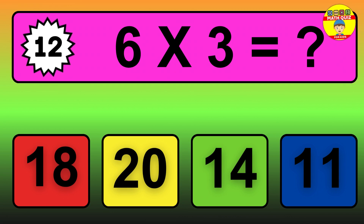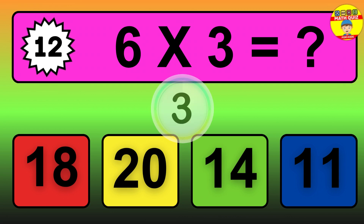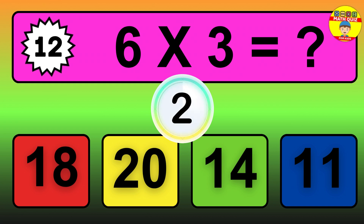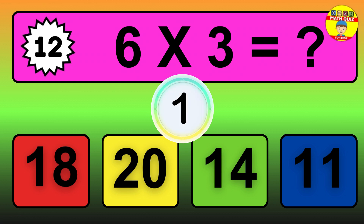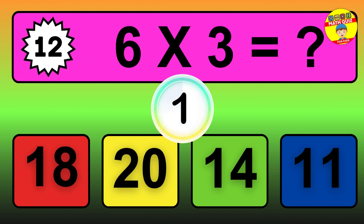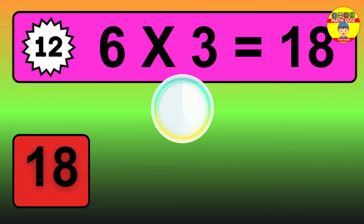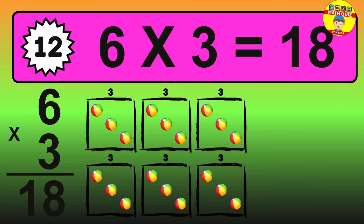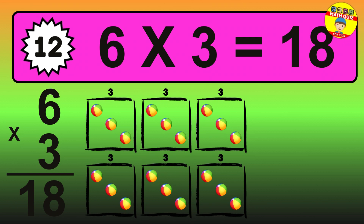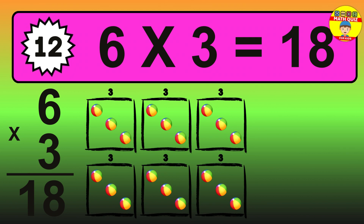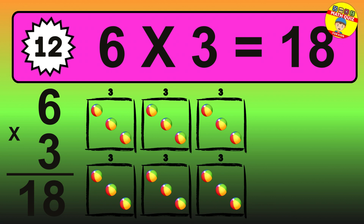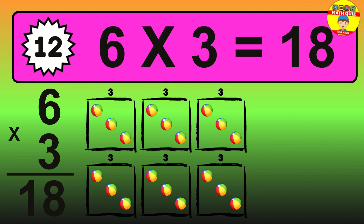Question 12. 6 times 3 equals what? The answer is 6 times 3 is 18. To calculate, we have 6 groups with 3 balls each one. So how many balls do we have? 18 balls.